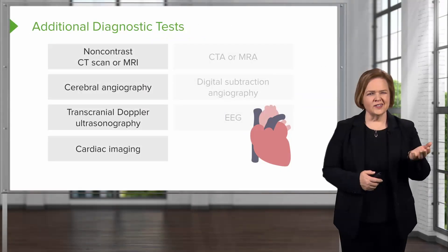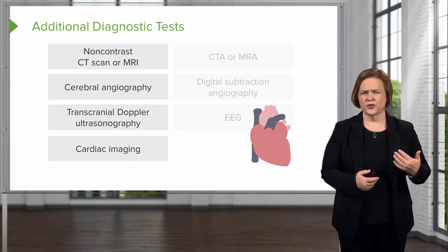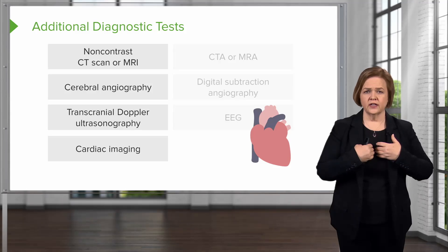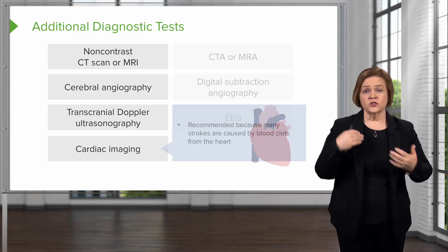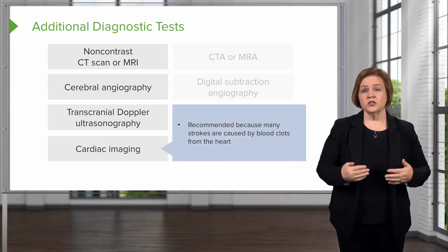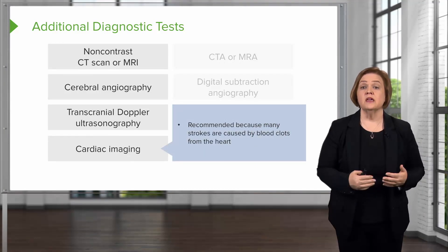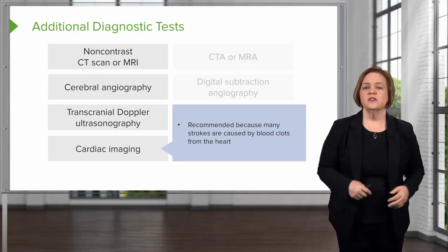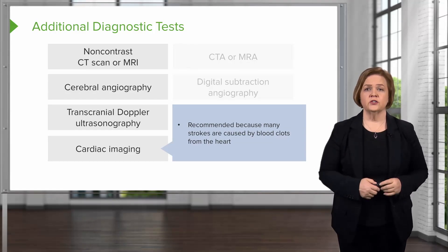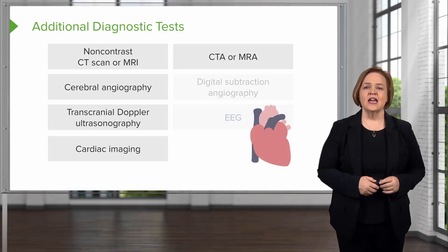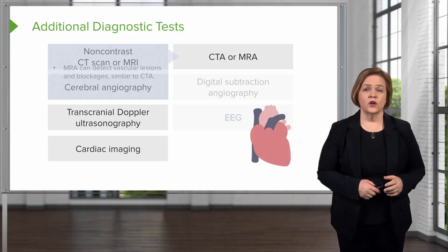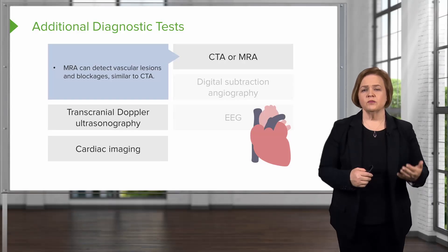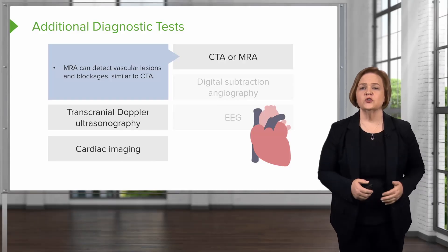Cardiac imaging is also recommended because many strokes are caused by blood clots that come through the heart, which is why they may order cardiac imaging alongside neuro tests. A CTA or MRA can also see vascular lesions or blockages — an MRA can be really similar to a CTA in that regard.